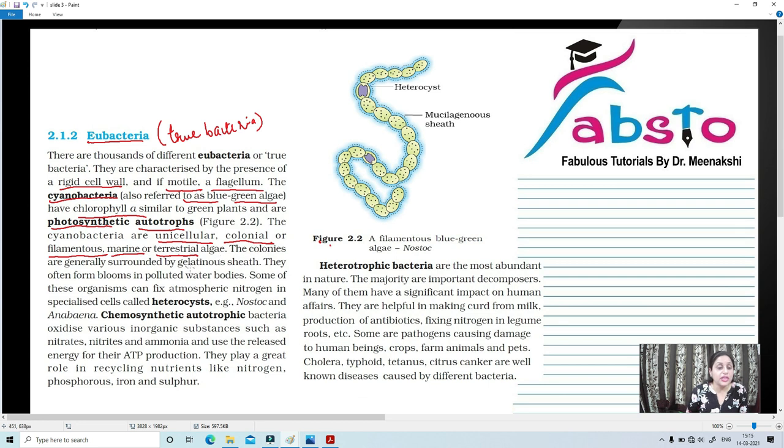So now, the colonies are generally surrounded by a gelatinous sheath, which makes them waterproof and gives them a slimy touch. Now, they often form blooms in polluted water bodies. I hope you have studied about the term algal bloom. What is algal bloom? When too many nutrients increase in the water, to utilize those nutrients, many cyanobacteria grow on it. And the water becomes polluted.